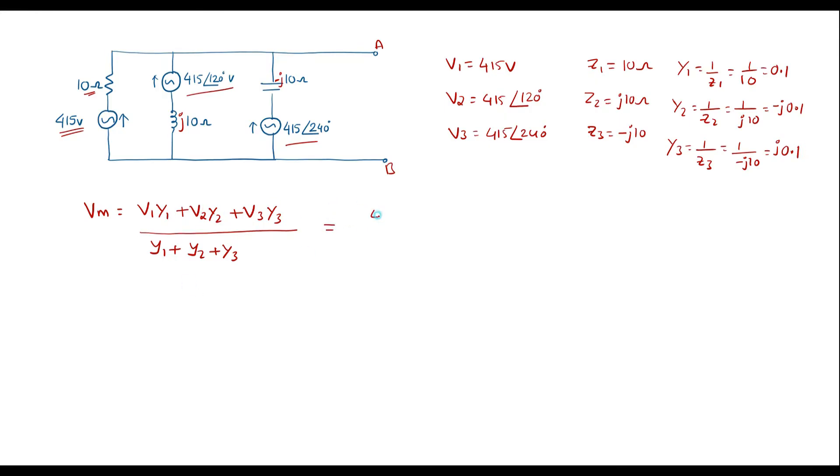Let me simplify this. V1 is 415 into Y1 is 0.1 plus V2 is 415 at an angle of 120 degree into Y2 is minus J 0.1 plus V3 is 415 at an angle of 240 degree into Y3 is J 0.1 whole divided by Y1 plus Y2 plus Y3 that is 0.1 minus J 0.1 plus J 0.1.